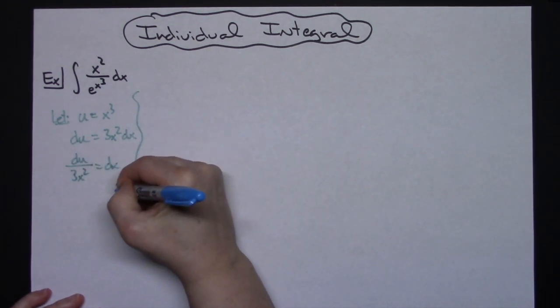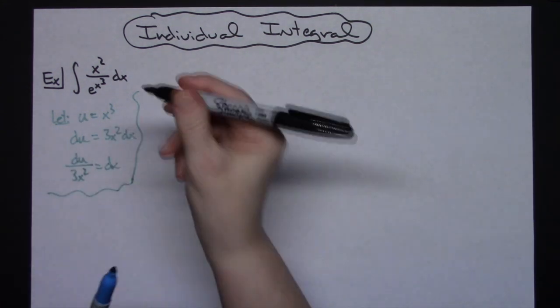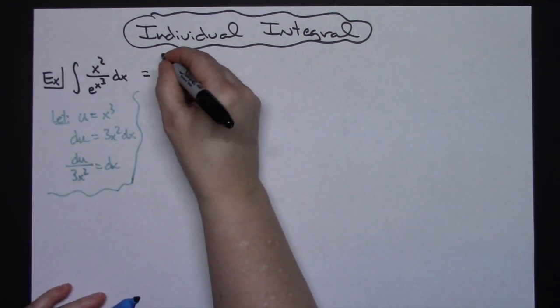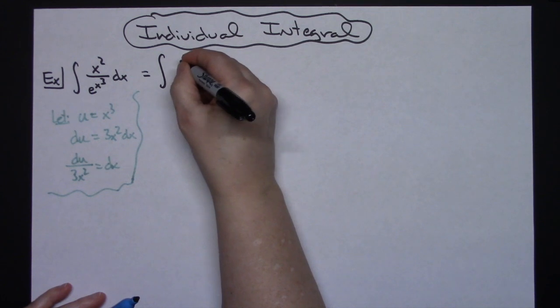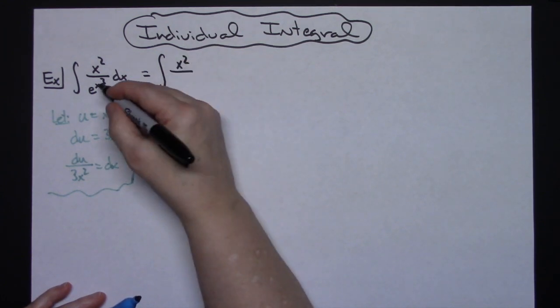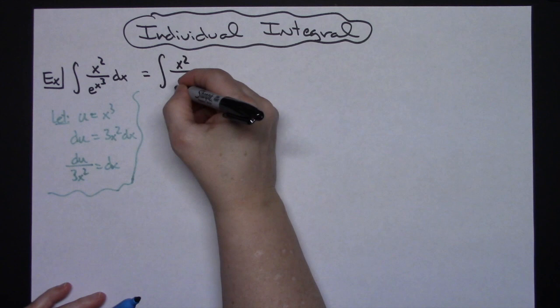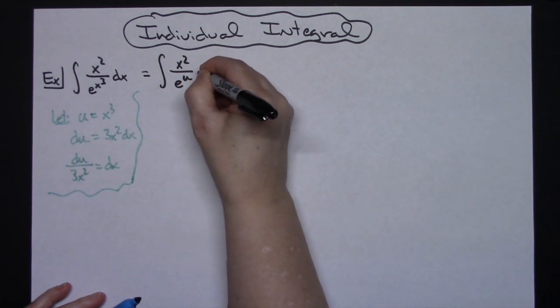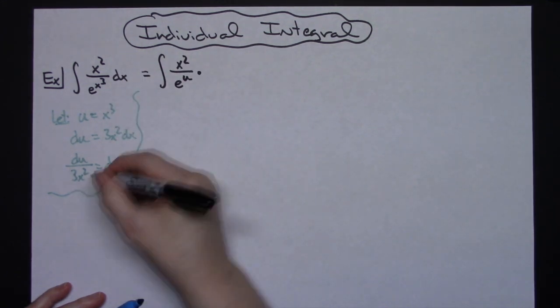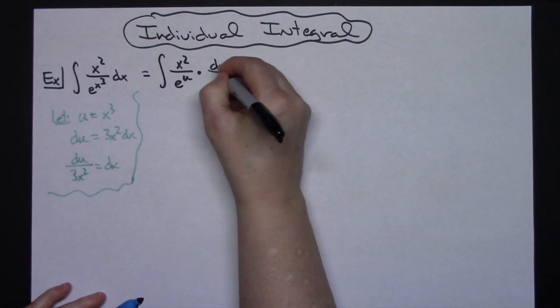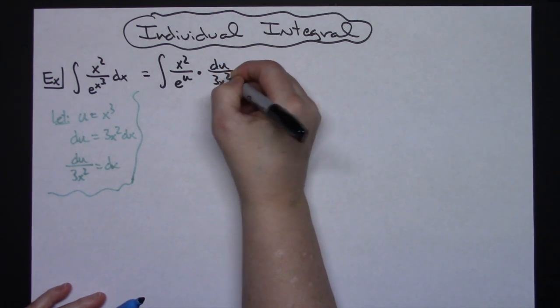That's going to be our initial u substitution right there. So I'm going to come up here and I'm going to start substituting things I know. The x squared is going to stay put. Then this x to the third right there will be my u, so e to the u, and then I'm going to replace that dx with what it equals, du over 3x squared.